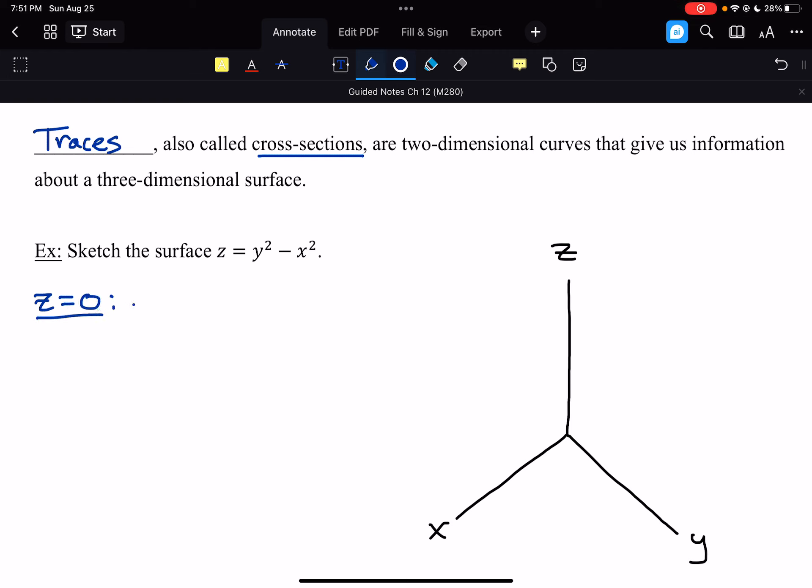So, when z equals 0, we get 0 equals y squared minus x squared. If you add that over, we get y squared equals x squared, which gives us y equals plus or minus x. So, we end up with two lines. Y equals x and y equals negative x. And that's z equals 0. That gives us those curves there.